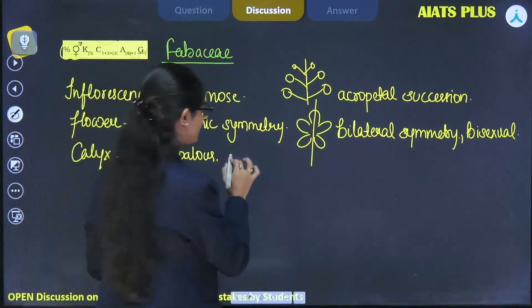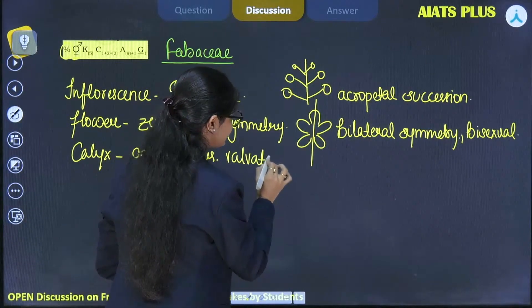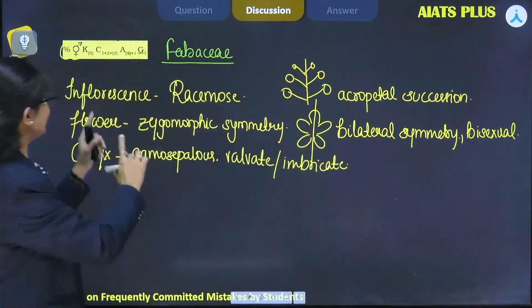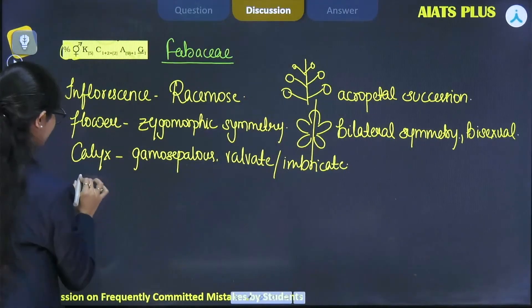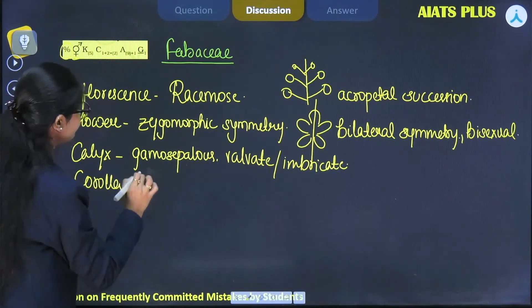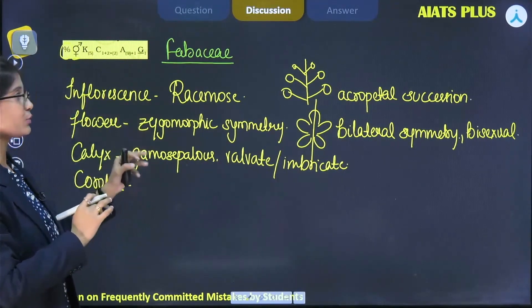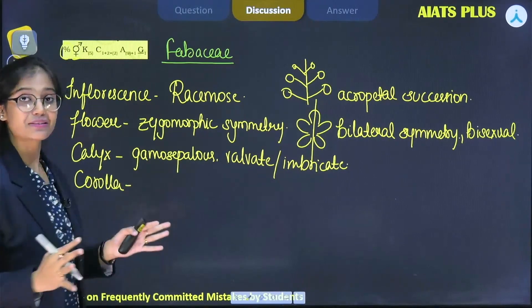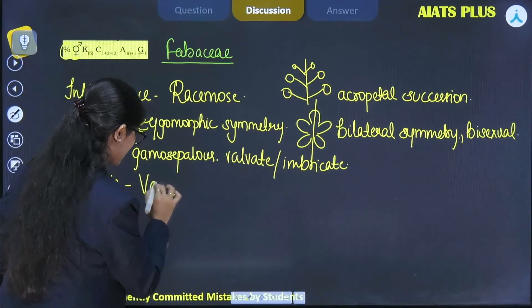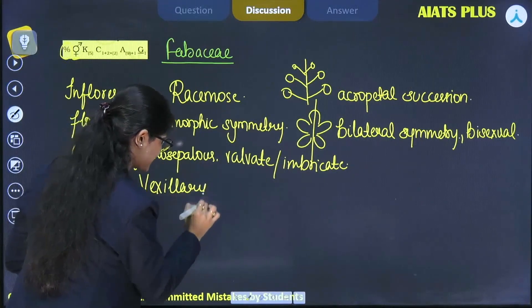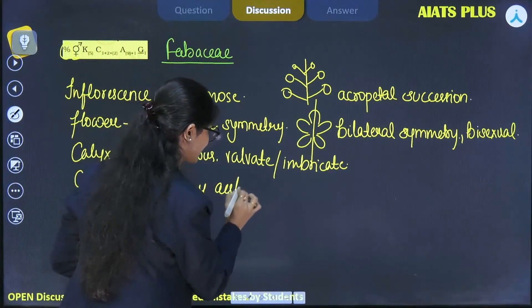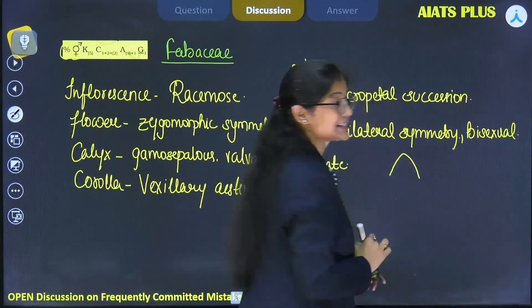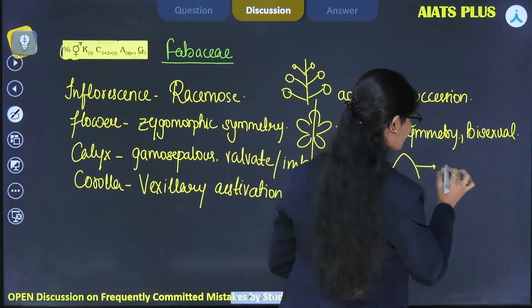Let's move to the next - it denotes corolla. Here you can see a very special type of aestivation in which one petal is single, next to two petals, and the next two petals are fused together. This type of aestivation is known as vexillary aestivation, which is generally found in the members of Fabaceae. Let me explain how - the first petal is the large posterior standard petal.